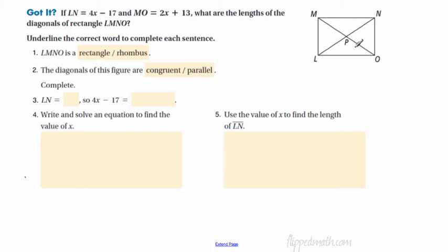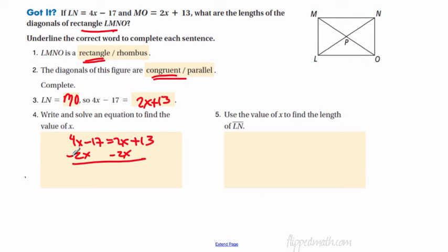So finding the diagonal length. What they're going to do is give you problems, and they're going to tell you either part of the diagonal or the entire diagonal. Underline the correct word to complete the sentence. LN equals 4x minus 17, MO equals 2x plus 13. What are the lengths of the diagonals? We know that LMNO is a rectangle because they tell us that right here. The diagonals of this figure are congruent to each other. So if LN, the distance from L to N, equals the distance from M to O, that means that 4x minus 17 would equal 2x plus 13. So let's solve that here in the box. 4x minus 17 equals 2x plus 13. How do we solve that? Subtract 2x from each side. We get 2x minus 17 equals 13. Add 17. They cancel. 2x equals 30. We'll do that one in our head. x equals 15.